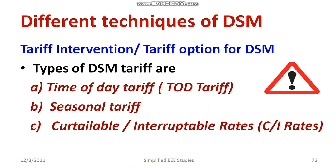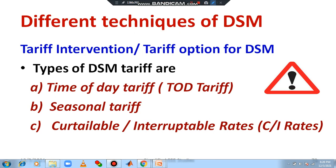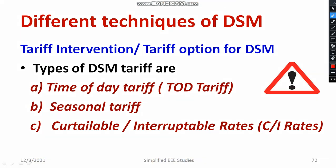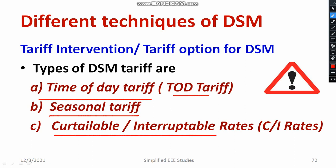In power generation and economics, you must have studied about different types of tariff, such as fixed tariff, two-part tariff, block rate tariff, flat rate tariff, etc. But as far as demand-side management is concerned, we need to be familiar with new types of tariff, such as time of day tariff — also known as TOD tariff — seasonal rate tariff, and curtailable or interruptible rate tariff, also known as CI rate tariff. These are the three types of tariff used in demand-side management.